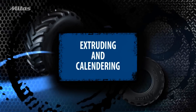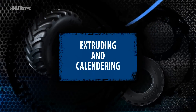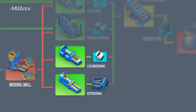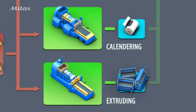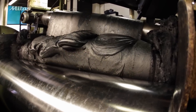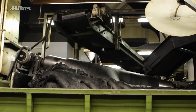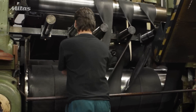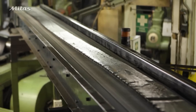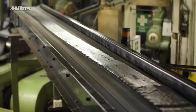Extruding and calendering of tire components: the mixed rubber compound is used for calendering the inner liner and extruding the tread and sidewall. First, the rubber compound is heated, then put through extruder machines where the tread and sidewalls are formed into required shapes.